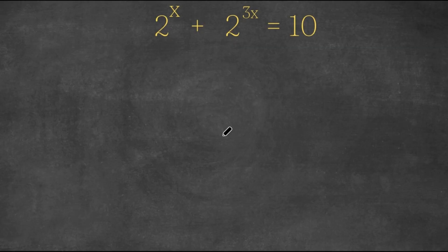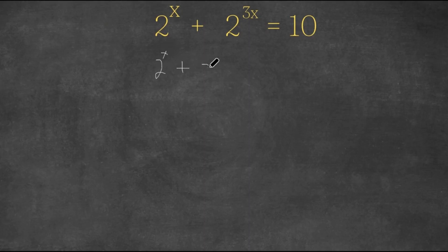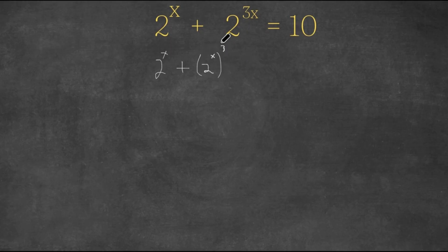Welcome back to Click Academics. In today's video, I'm going to be teaching you guys how to solve this exponential equation. We have 2 to the power of x plus 2 to the power of 3x equals 10. What we're going to do first is rewrite this equation as 2 to the power of x plus 2 to the power of x, to the power of 3. This equals 10.